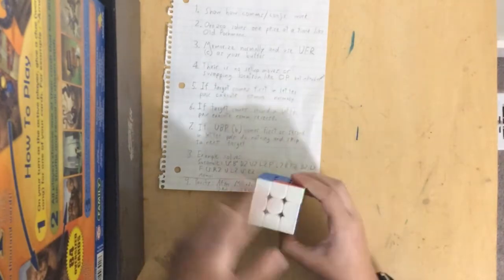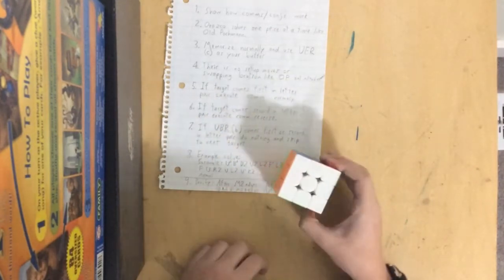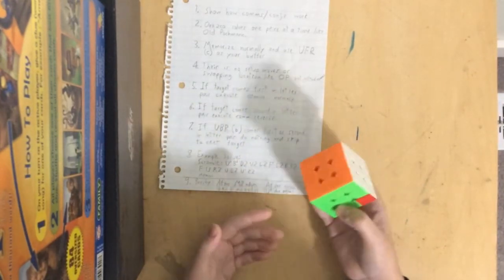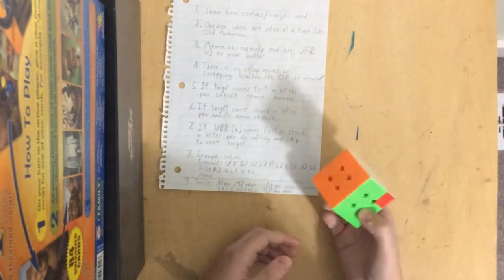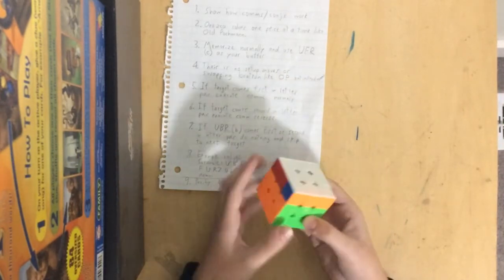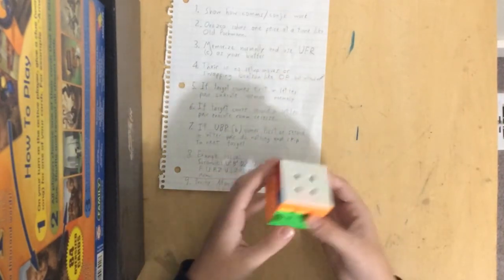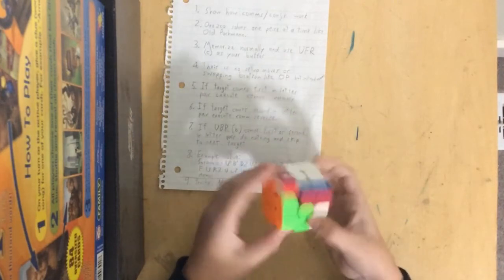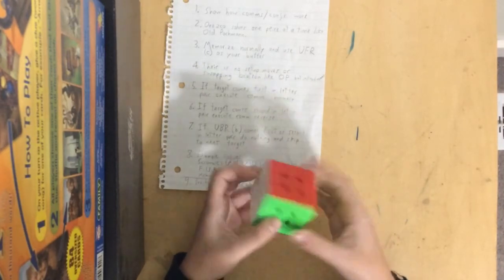And then we go to our corners, which is just the letter B. So that means we have to do nothing for the entire corners. So what we do then is the parity algorithm, which is just U' and then a JA perm. And yeah, that's it for the parity.